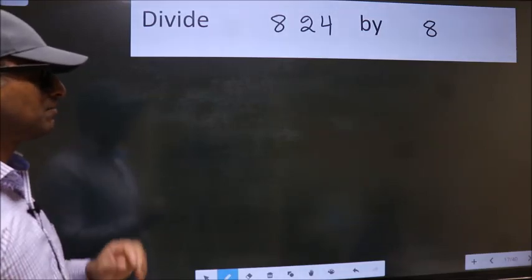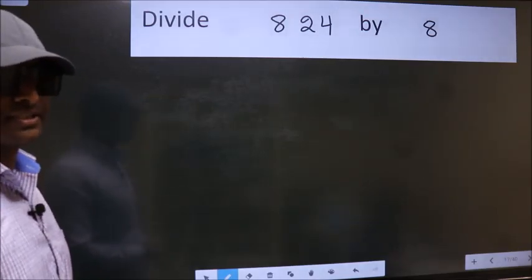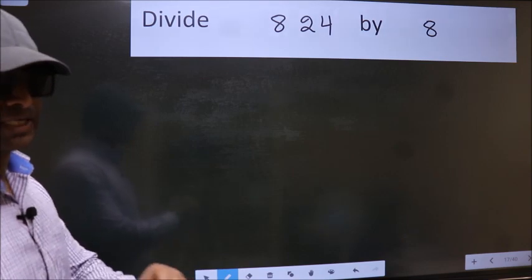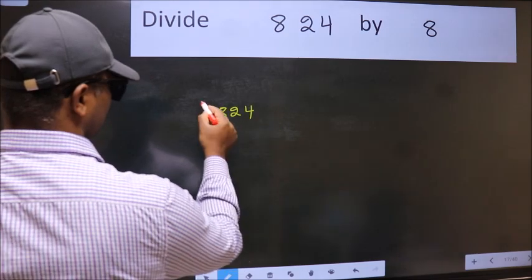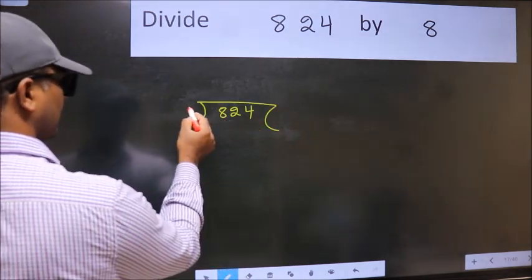Divide 824 by 8. To do this division, we should frame it in this way: 824 here, 8 here.